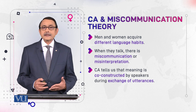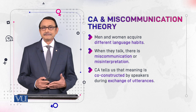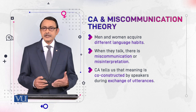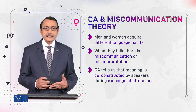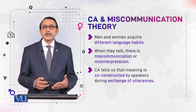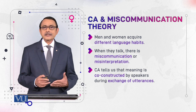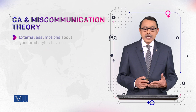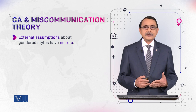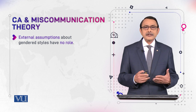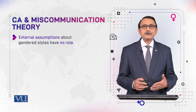Let's see whether conversation analysis accepts this theory or not. CA tells us that meaning is co-constructed by speakers during the exchange of utterances. Speaker A speaks and speaker B listens, then speaker B speaks and speaker A listens, and through their pair of utterances they co-construct the meaning of their talk. External assumptions, background context, gender, and other identity factors like age and color have no role in the construction of meaning.